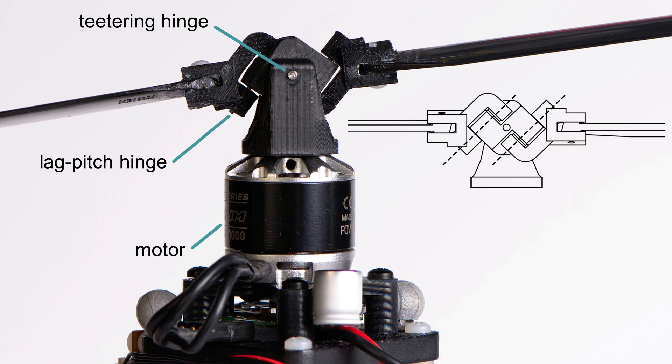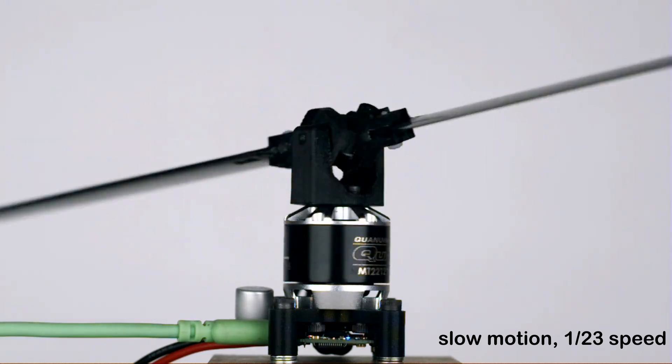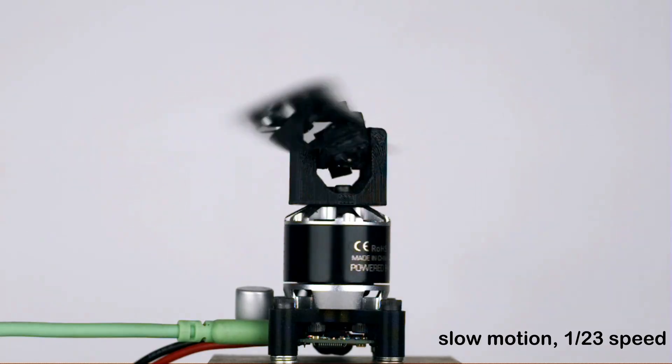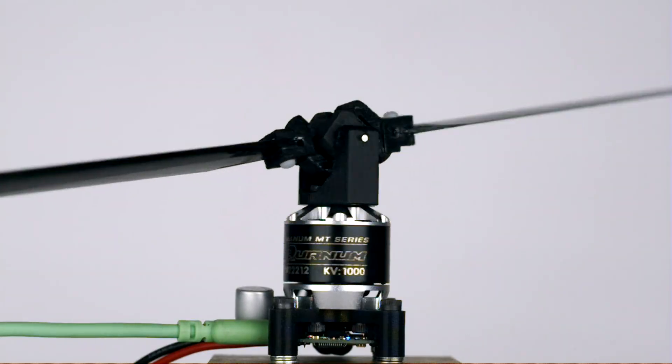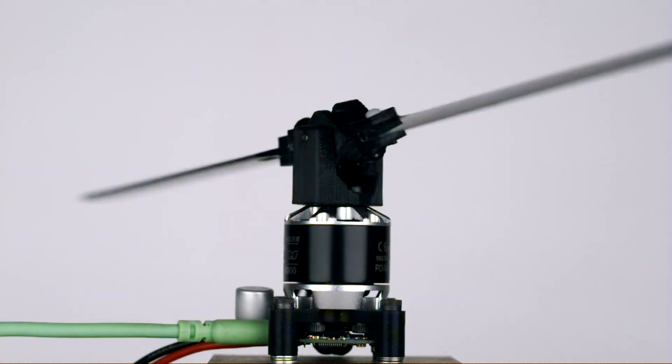A passive teetering hinge allows the blades to flap up and down. Passive skewed lag pitch hinges kinematically couple lag motions excited by the drive motor into cyclic blade pitch changes. Those blade pitch changes aerodynamically drive a coherent flapping response, which we observe as a tilting of the tip path plane.